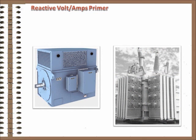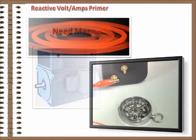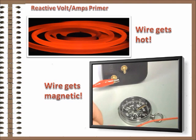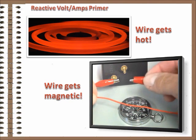The first of these loads comes from the requirement of some equipment to operate with magnetic fields, mainly motors and transformers. When an electrical current flows through a wire, two things happen to the wire: it heats up — you knew that — and the wire becomes a magnet, as this video clip shows.